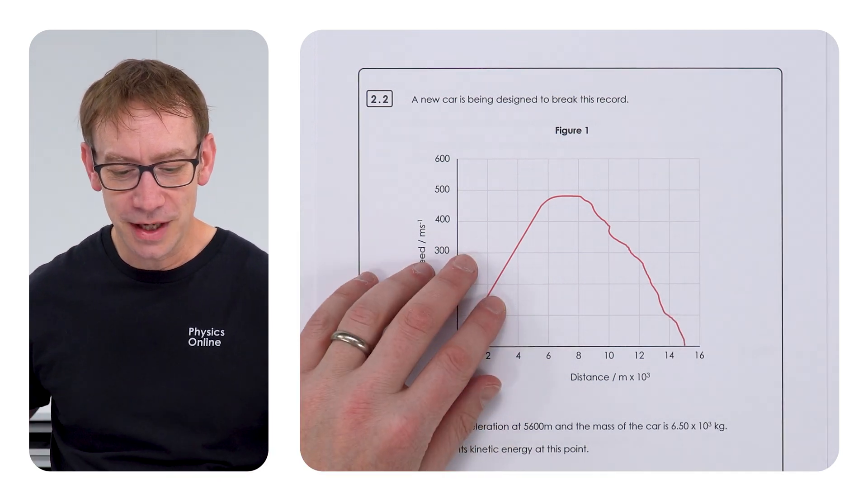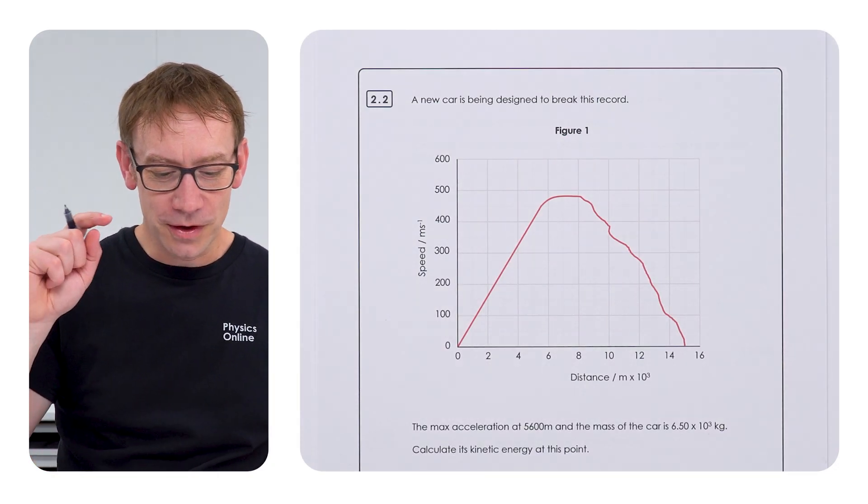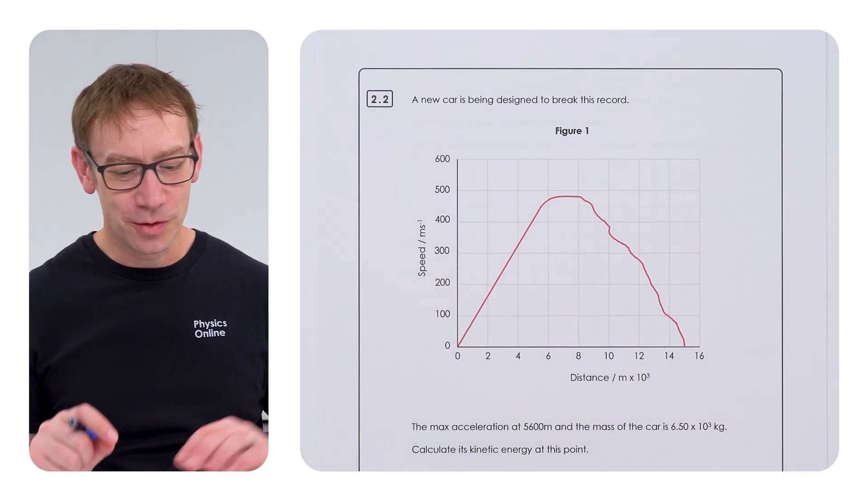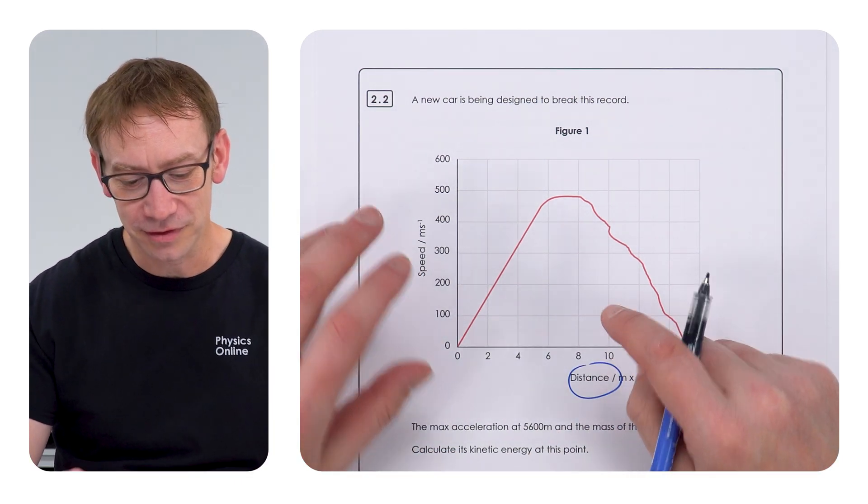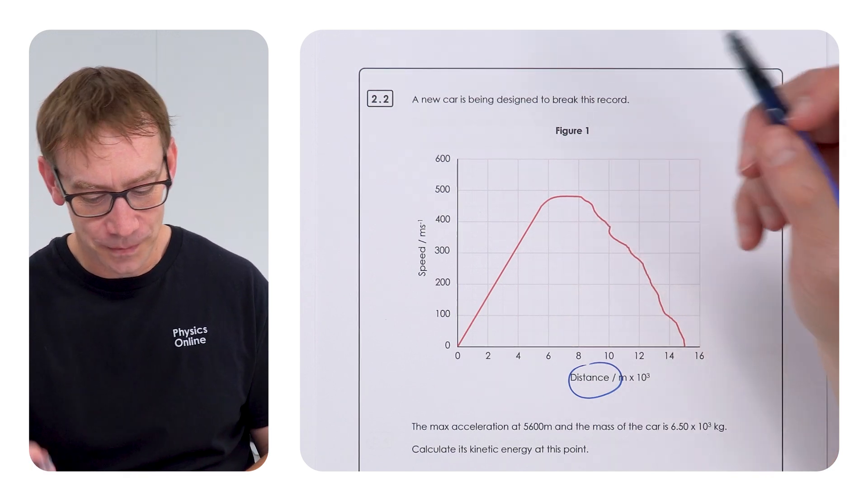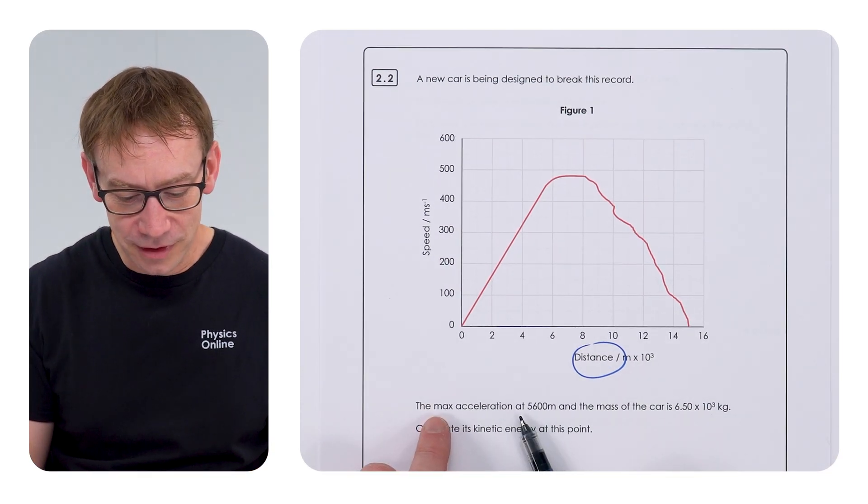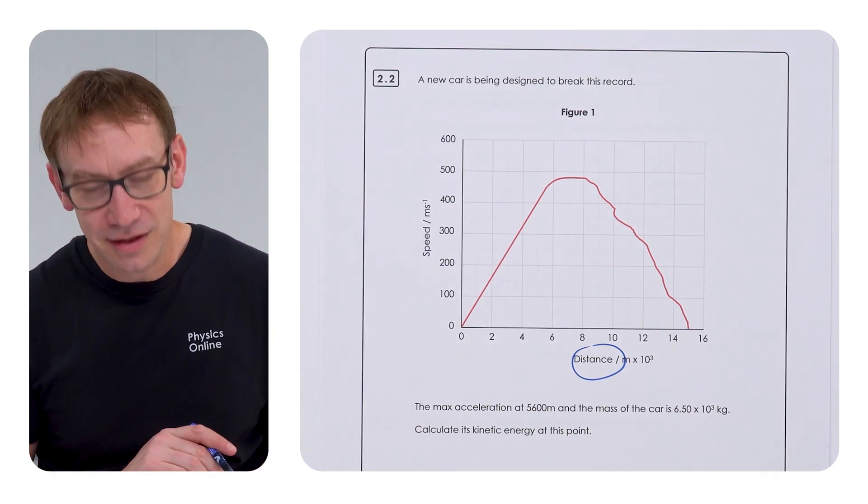The next bit had a graph of some data. This is about a new car that's being designed to break the record. I think the actual record has existed since the 90s. So it's been there for a long time. I know there is a load of stuff recently with lots of press and stem projects around a new car. But so far, nothing recently has broken this land speed record. Anyway, we've got a speed distance graph. Now, that's weird. Normally, we have a speed time graph. So it's always important to actually try and identify what they've got on each axis. You don't need to know about speed distance graph. It's not a core graph. But the skills in this question are about interpreting some data. Now, the max acceleration at 5,600 metres and the mass of the car is 6.5 times 10 to the 3 kilograms. Calculate its kinetic energy at this point.